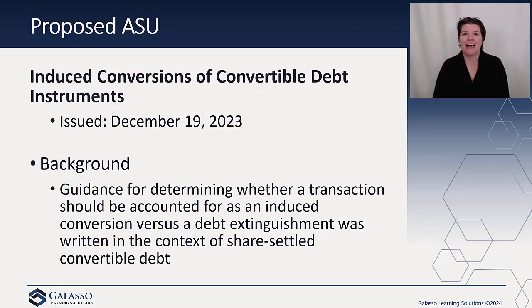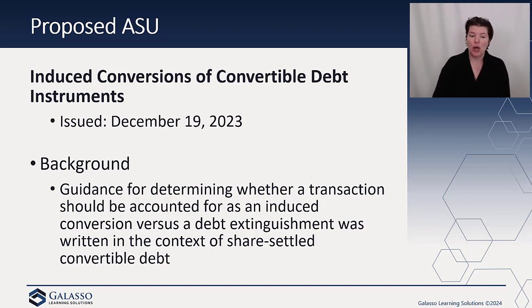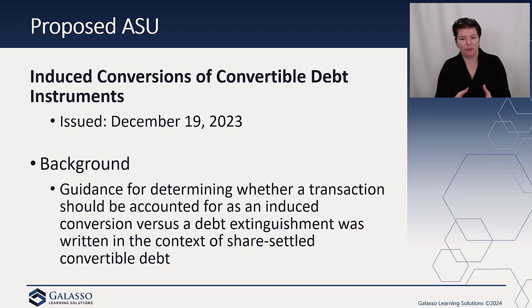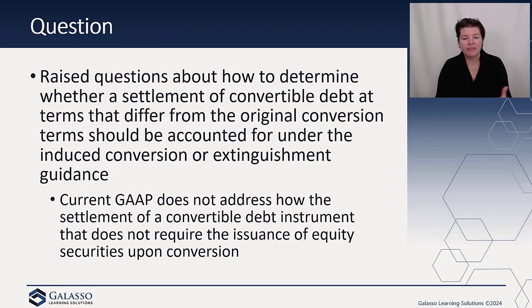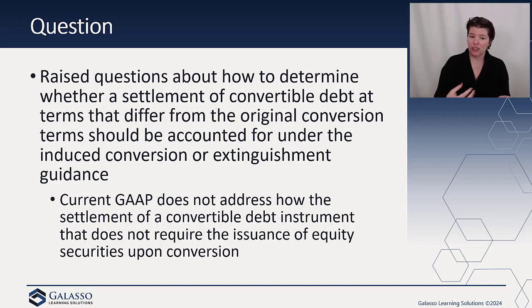This was issued back in December - we've had a lot of topics on the blog and we're still working through them. This one isn't due for comments until March, so you still have plenty of time if you're interested. This is providing guidance for determining whether a transaction should be accounted for as an induced conversion or if it's really just a debt extinguishment, as part of settling share-settled convertible debt. When making changes to convertible debt, GAAP currently does not provide very clear guidance, and so there have been a lot of questions raised about how to determine whether a settlement of convertible debt at terms that differ from the original conversion terms is an induced conversion or an extinguishment.